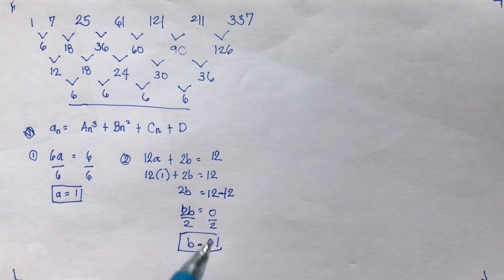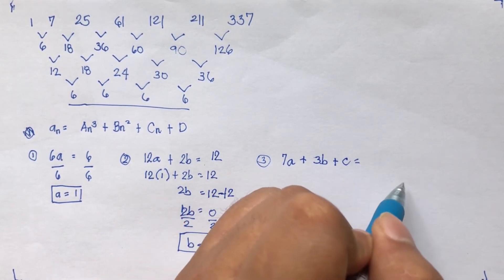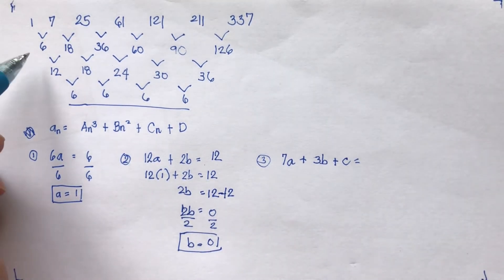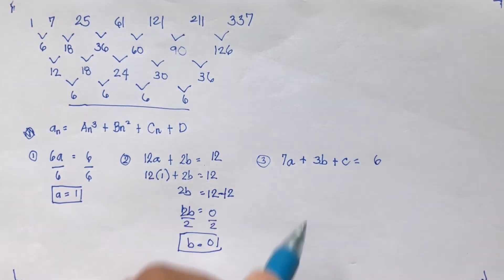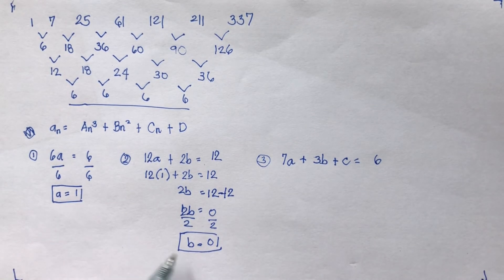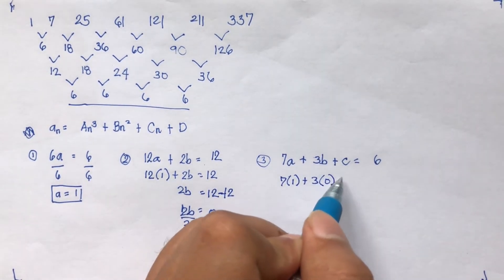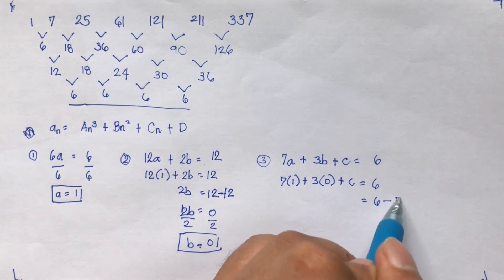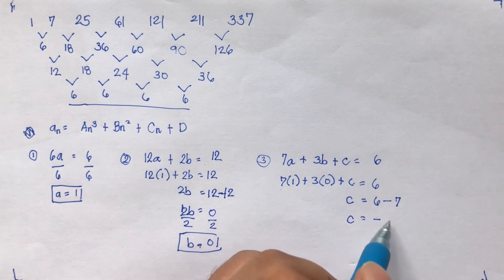So you have a, you have b, and then for the third formula, the formula is 7a plus 3b plus c equals the first number subtracted from the second term, or in this case, it is 6, which is like 7 minus 1. So 7a, substitute these two values in the third equation. So 7 times 1 plus 3 times 0 plus c equals 6. This will be 7, so transpose that to the other side, it will be negative 7. This will be 0, leaving only c. And c equals negative 1.